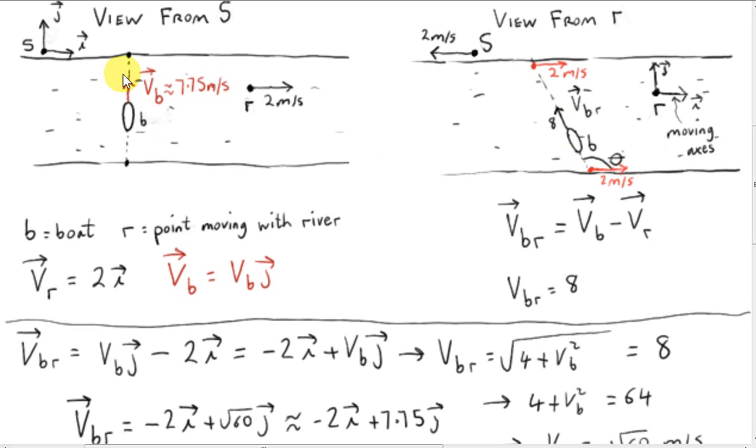So, even though from the shore the boat appears to be moving in a straight line directly across the river, the boat has to enter the river at some angle theta, which is greater than 90 degrees. If it's going to head from this moving point towards this moving point here in the river.